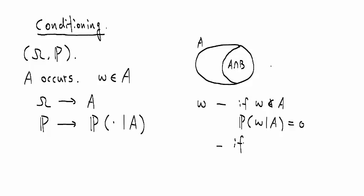And if omega is in A, we have probability of omega of this. Well, this should be, the chance for this particular outcome should increase. We write that as probability, the original probability of this, divided by probability of event A.